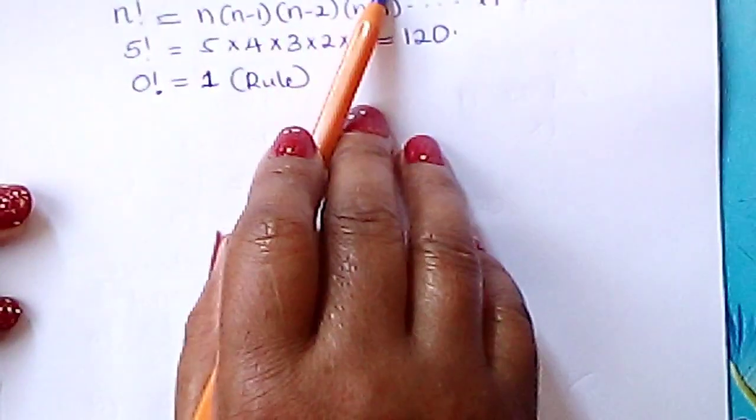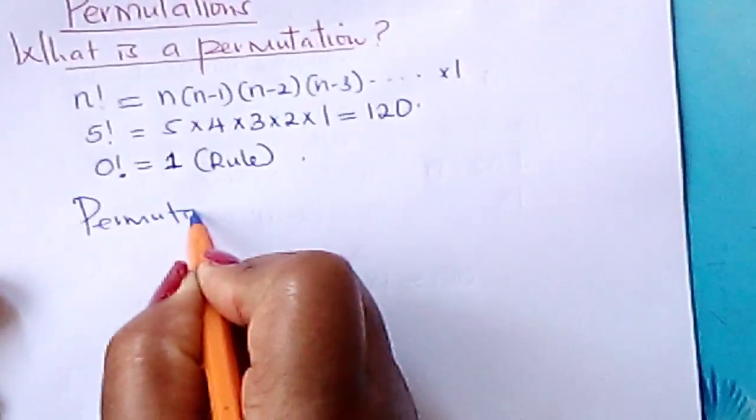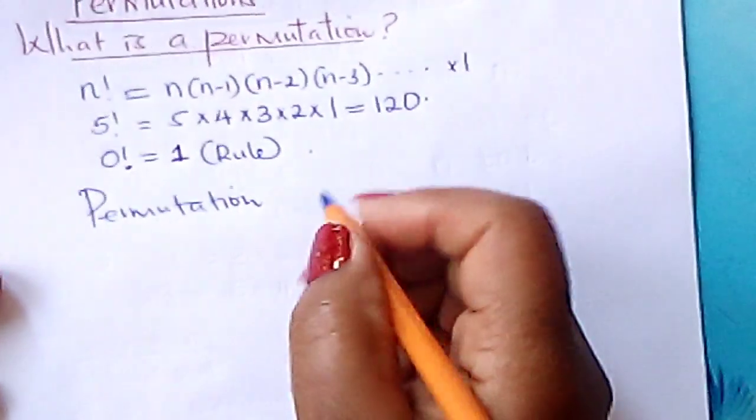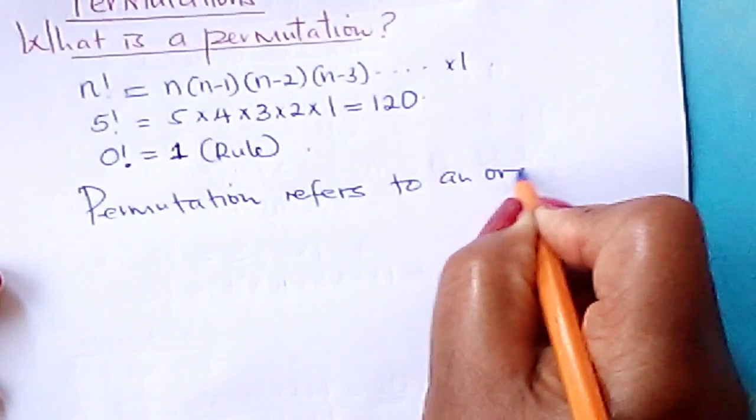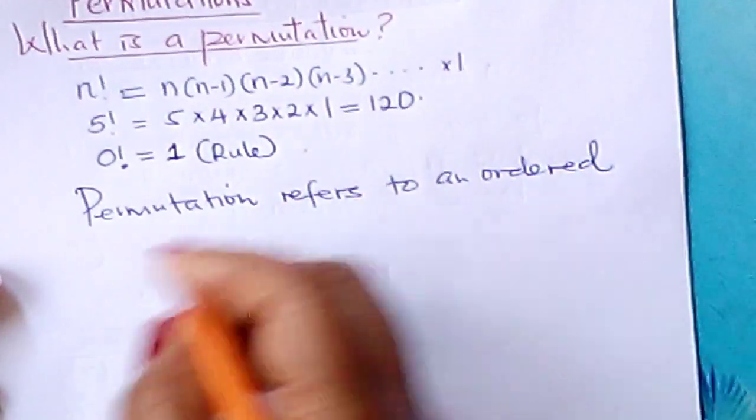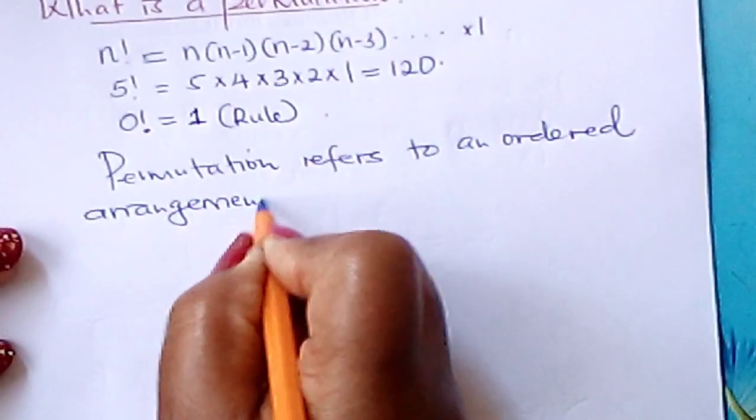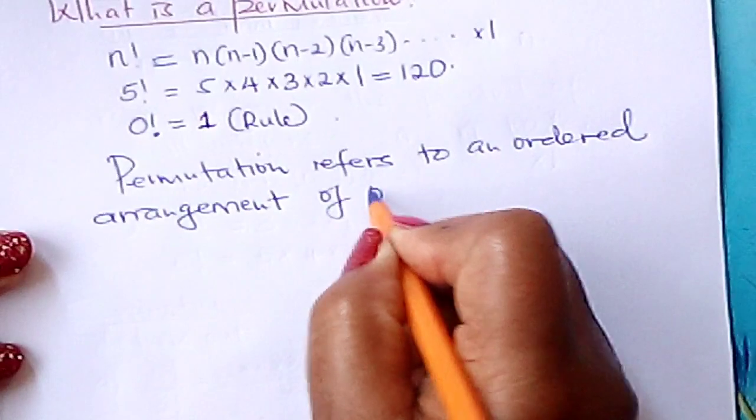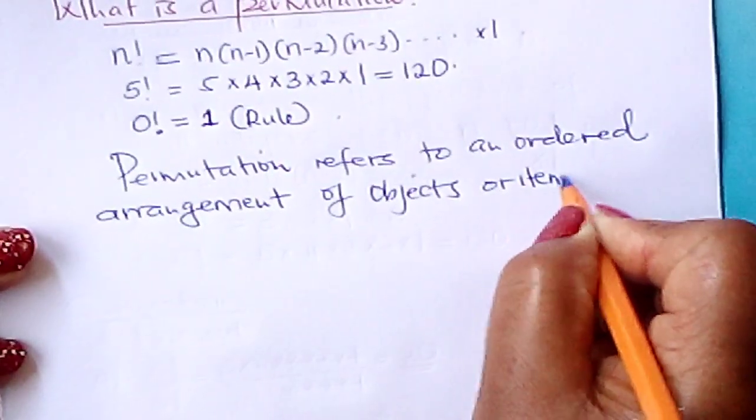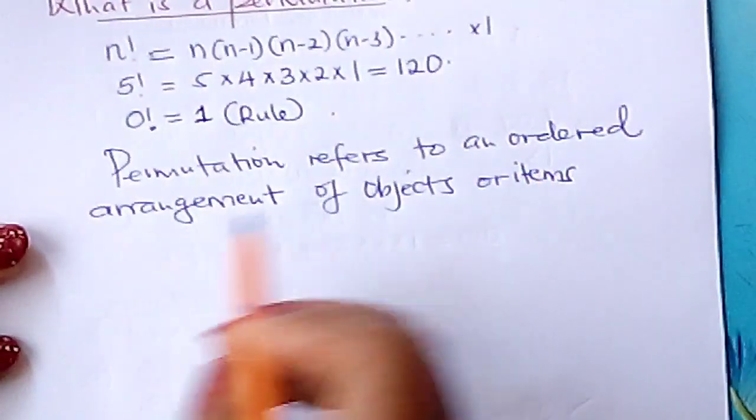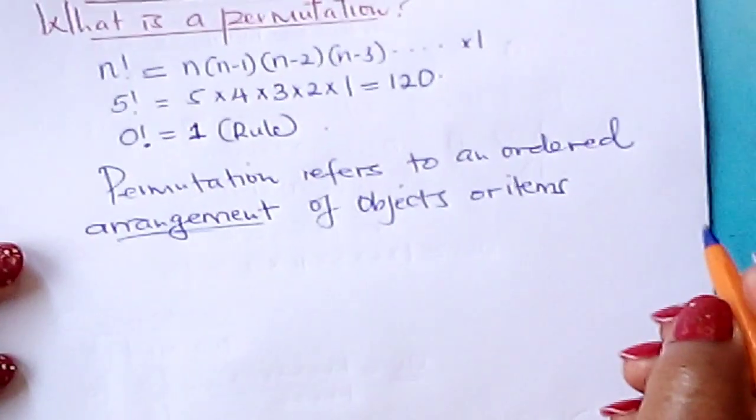And therefore, what is a permutation? A permutation refers to an ordered arrangement of objects or items.